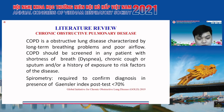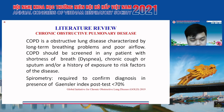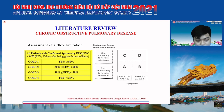COPD is a truly obstructive lung disease, characterized by long-term breathing problems and poor airflow. Spirometry is the gold standard for diagnosing COPD. COPD is determined when the post-bronchodilator FEV1/FVC ratio is less than 70%. Based on spirometry results, COPD is divided into four stages based on FEV1, and patients are also classified into four groups based on their severity, symptoms, and number of exacerbations.